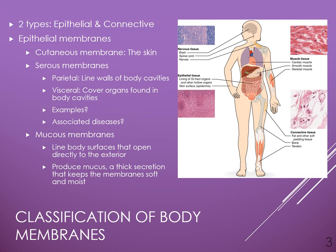Mucous membranes have specialized cells inserted within them called goblet cells, and these goblet cells produce mucus. Mucous membranes are also epithelial membranes, and they contain both an epithelial layer and a fibrous, or connective tissue layer. These membranes line body surfaces that open directly to the exterior of the body — examples include the vagina, the mouth, the nose, and the anus. They also line the urinary tract. In most cases, the cell composition is either stratified squamous, or simple columnar. It could also be pseudostratified epithelia.